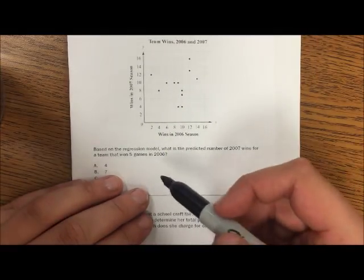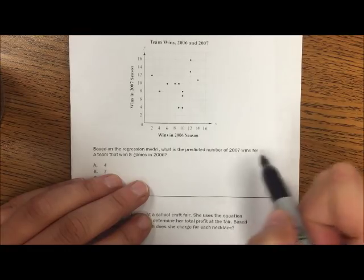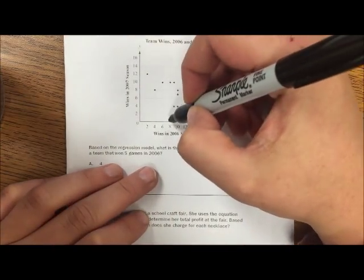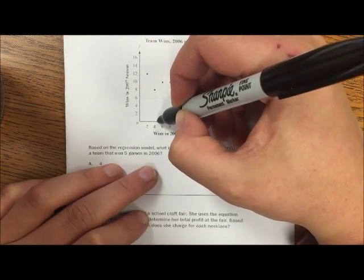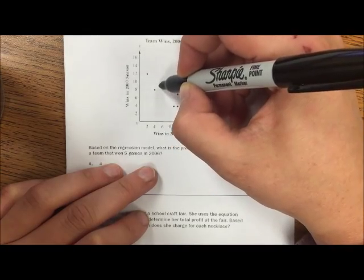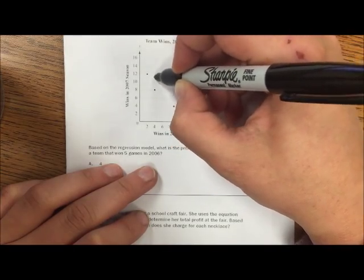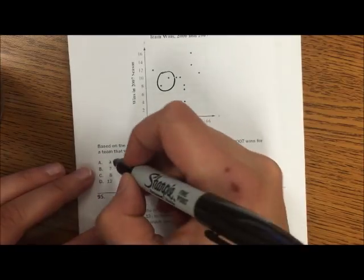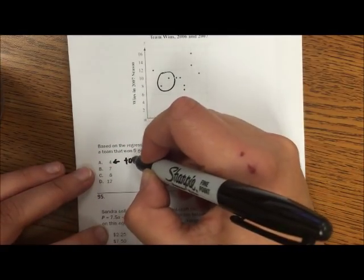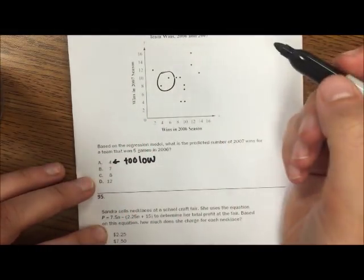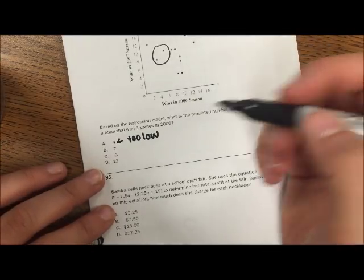Okay, so 2007 for five games in 2006. So here's five. Okay, so it would be somewhere in this region. So 4 is way too low.